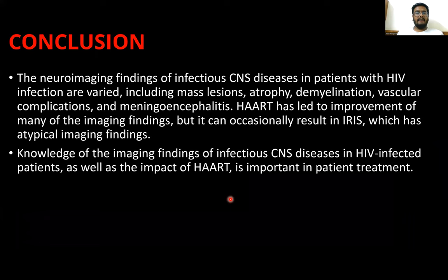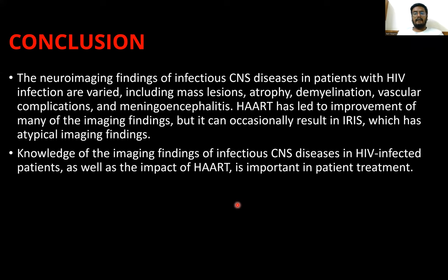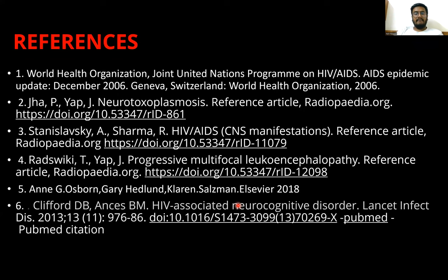Conclusion: the neuroimaging findings of CNS infectious disease in patients with HIV infection are varied, including mass lesions, atrophy, demyelination, vascular complications, and meningitis. HAART has led to improvement in many of the imaging findings, but can occasionally result in IRIS, which has atypical imaging findings. Knowledge of the imaging findings of infectious CNS disease in HIV-infected patients, as well as the impact of HAART, is important in patient treatment. These are all my references. Thank you.